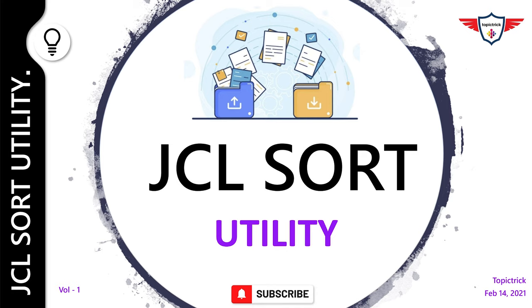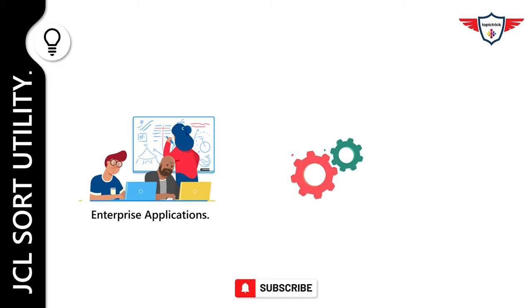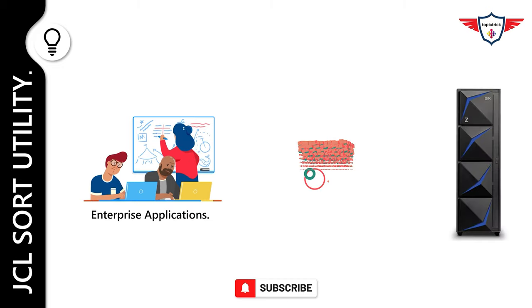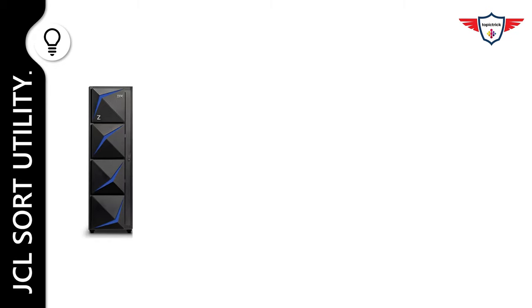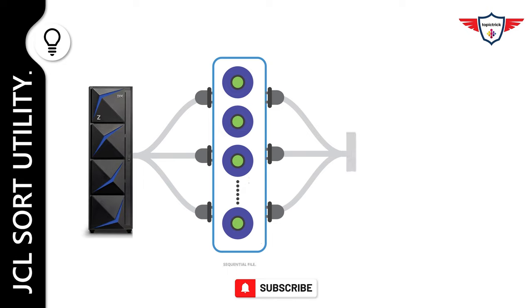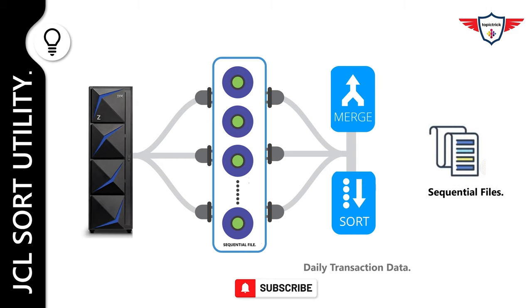Let's get started with an introduction to mainframe. The majority of the world's enterprise revenue and profit-producing applications, data, and transactions remain on mainframe systems. Sequential files are still commonly used in mainframe to store transaction data. Before the records in these files can be processed, they often need to be sorted or merged into an appropriate sequence — for instance, sales transactions sorted into customer or item number sequence before they can be used to prepare reports or update master files.